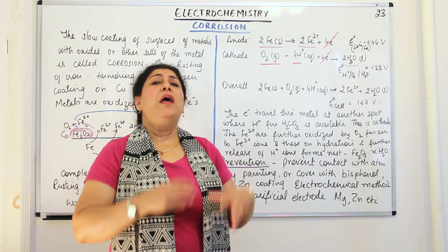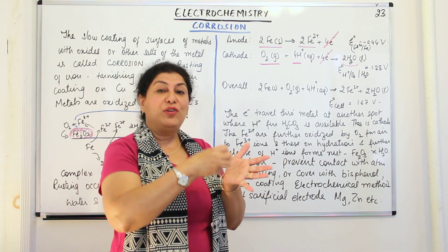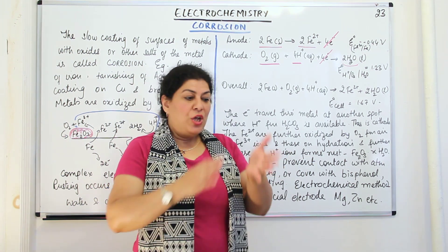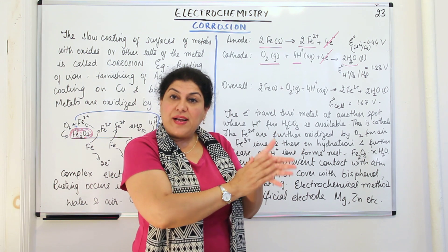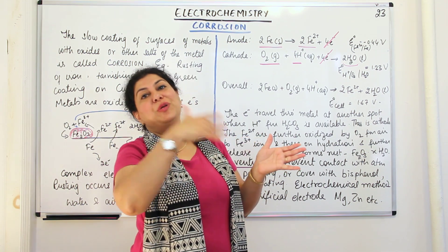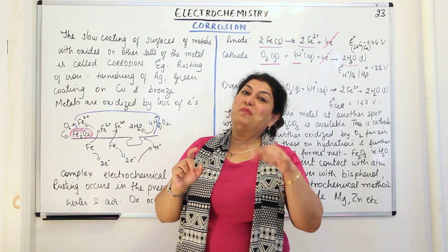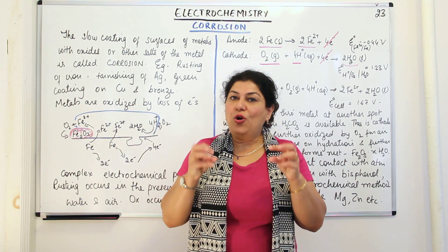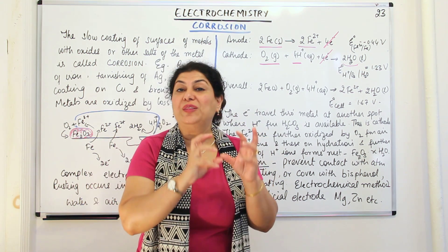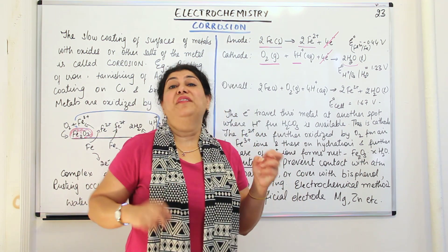Rust is a reddish-brown powdery substance. Wherever the iron metal is exposed, this rust is formed and it keeps eating away at the metal. Because the rust that is formed is powdery in nature, it falls off. When the powdery rust falls off, it exposes the inner metal to the atmosphere, thereby again creating the surface for this reaction to start again. More rust is formed, more of it falls off, and slowly over the years the air and moisture eat away on the iron — that is how bridges become weaker and weaker due to rusting.